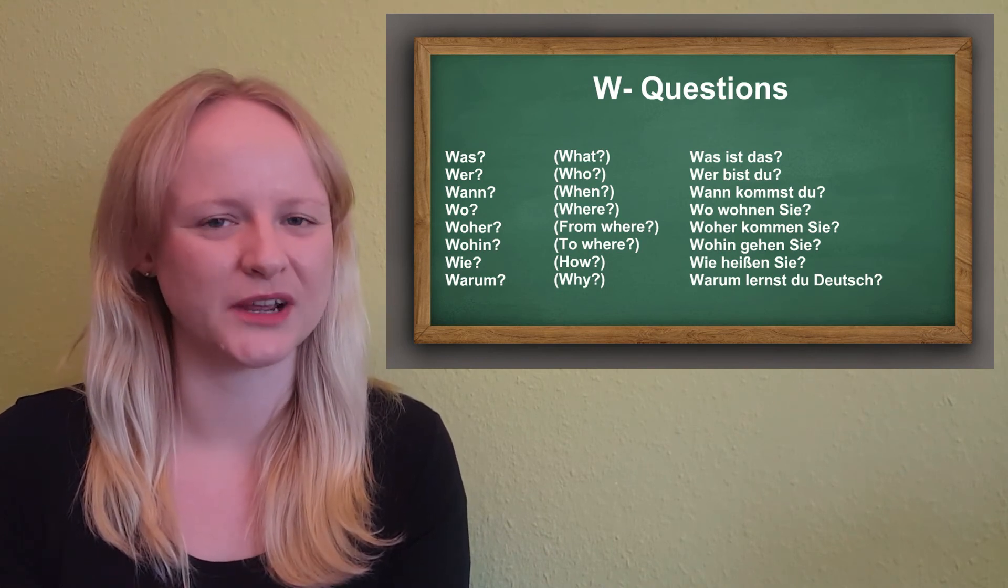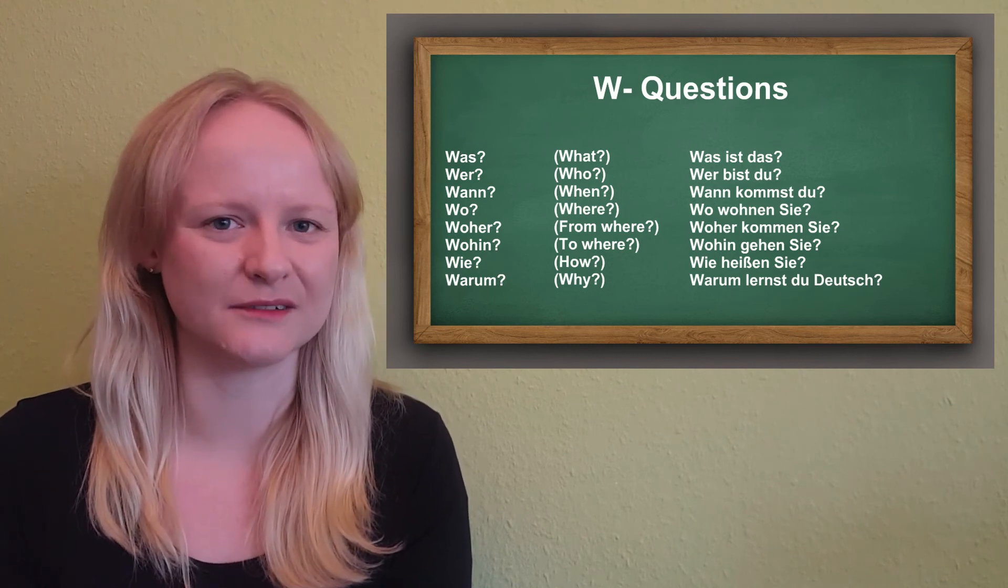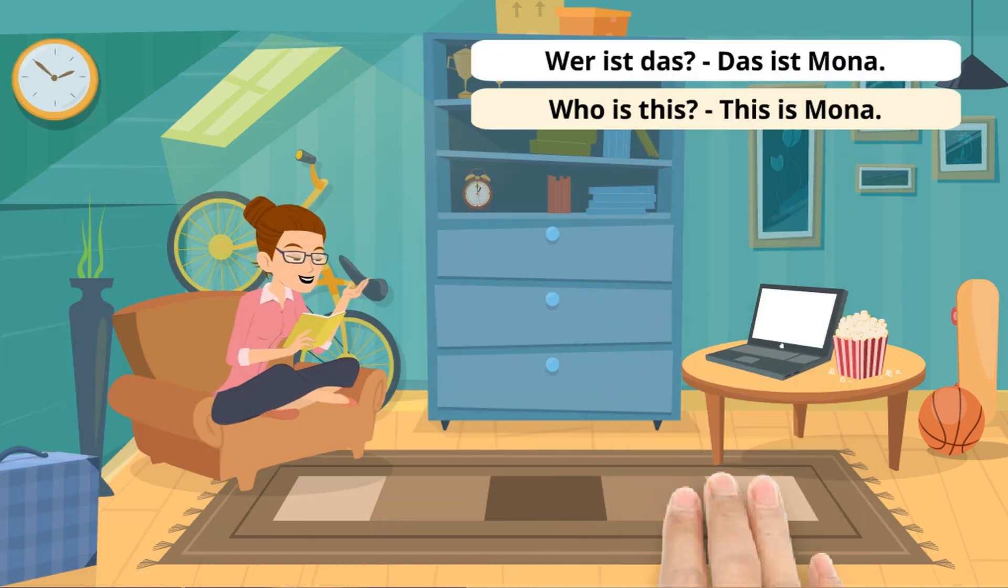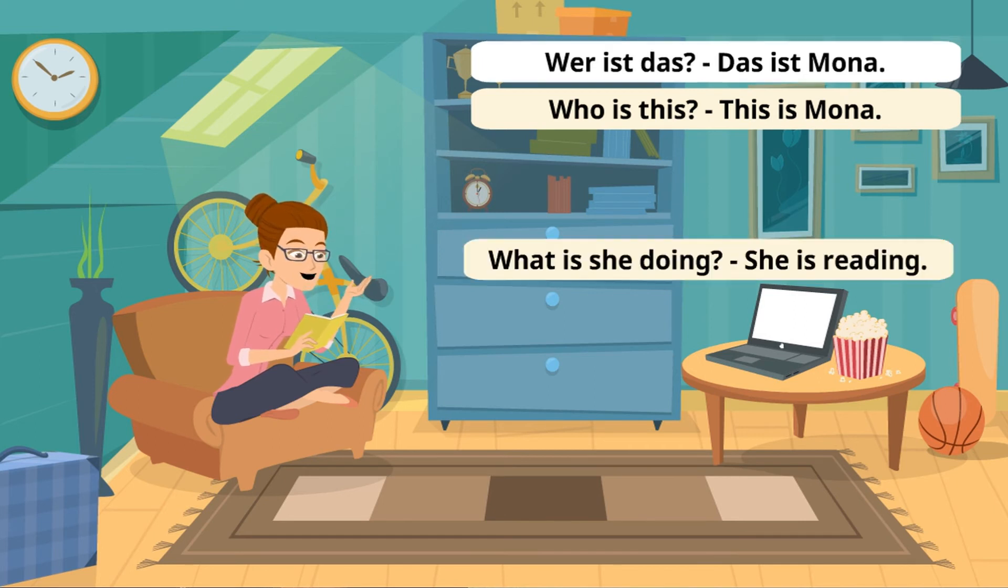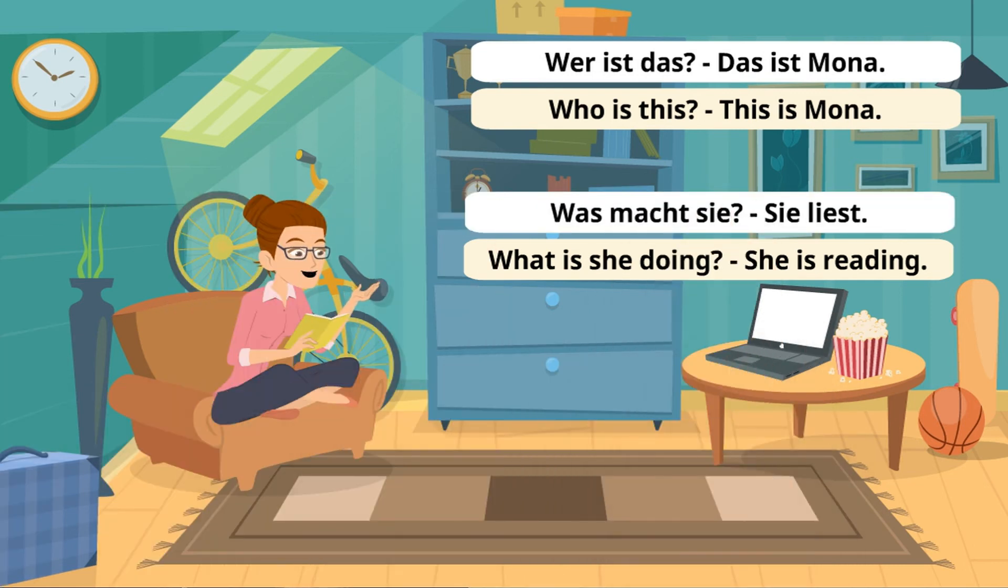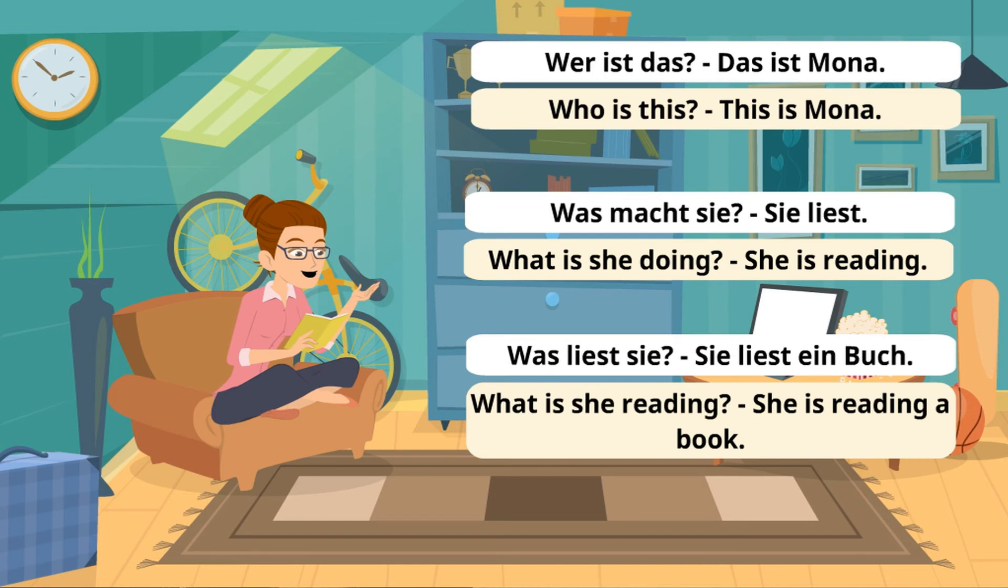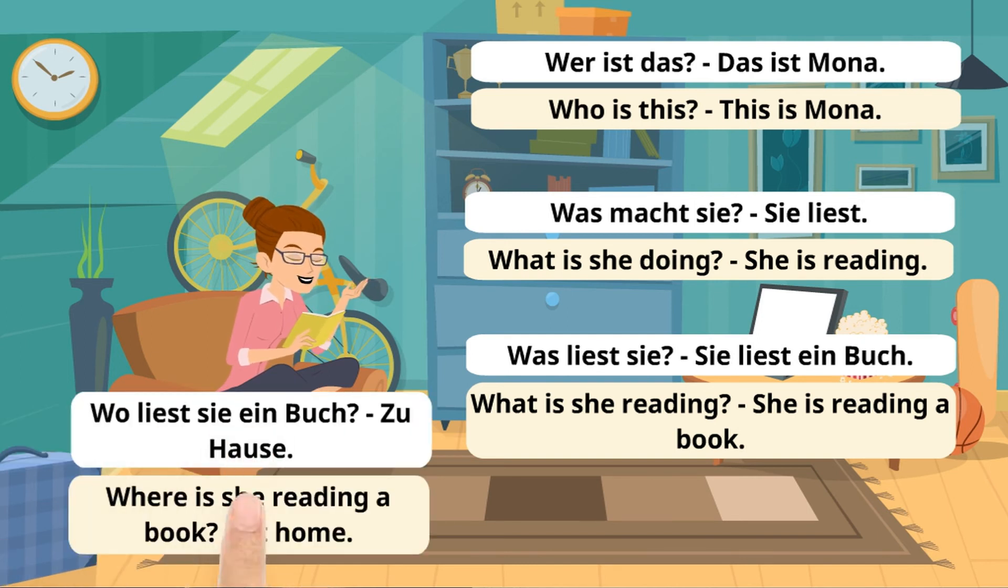Now it's finally time to practice what we learned. Let's return to our scenarios from the beginning of the lesson. But this time, we will be able to say and ask much more about them. As usual, I will do one example, then it's your turn. Pause the video whenever you need some more time to think. Wer ist das? Das ist Mona. Was macht sie? Sie liest. Was liest sie? Sie liest ein Buch. Wo liest sie ein Buch? Zuhause.